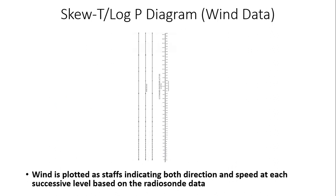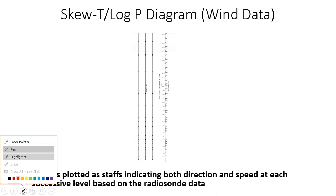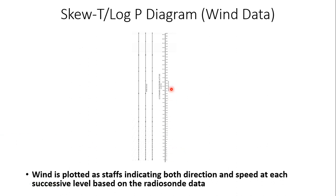Additionally, on the Skew-T Log-P diagram, we can get wind data. Wind is generally plotted as staffs — wind barbs — indicating both direction and speed, right along the vertical axis. You're going to get wind direction and speeds plotted as you go aloft.